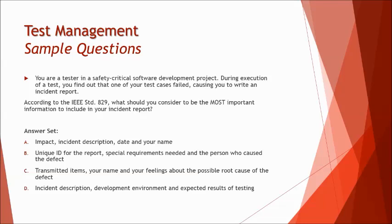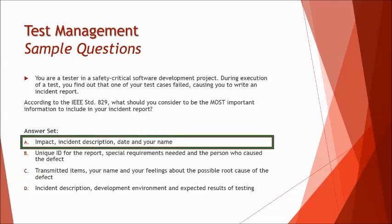Option C includes your feeling about the possible root cause, which is casual and not a standard detail field. Option D includes incident description, development environment and expected result — but it is the test environment that matters, not the development environment. If you get diverted by the name in option A, you might mistakenly choose D without noticing 'development environment.' So the right answer is A, as it contains the most relevant and important incident report information.